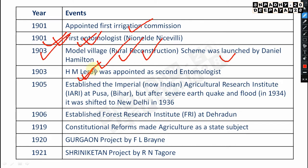From an entomological point of view, the second Entomologist to the Government of India was H.M. Lefroy in 1903. The first entomologist was Neonel de Niceville in 1901; after two years, H.M. Lefroy replaced him. Then in 1905, the Imperial Agricultural Research Institute — now known as IARI — was established at Pusa, Bihar.